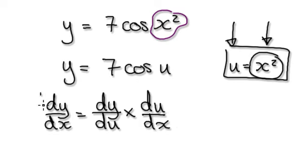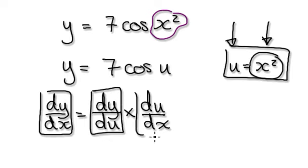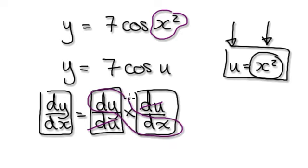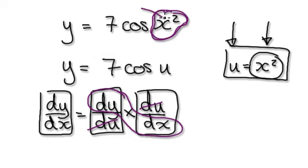So the overall dy by dx is given by this multiplied with this here, and that would then give you dy by dx. That's you applying the chain rule. That's good when it's nice and simple — you can see this thing is nice and simple here.